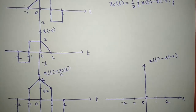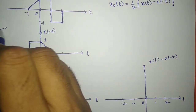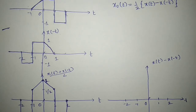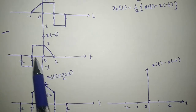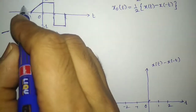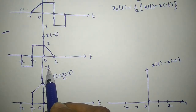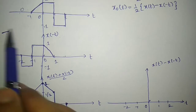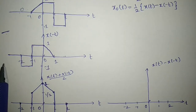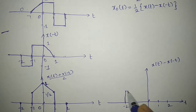Let me start from the extreme left, minus 2. From minus 2 to minus 1, x(-t) has amplitude minus 1 and x(t) is 0. So I am doing 0 minus (minus 1) which gives plus 1. So from minus 2 to minus 1, I get plus 1.